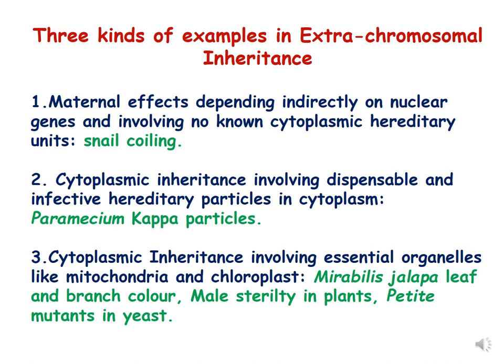There are three kinds of extra-chromosomal inheritance. The first is maternal effects, which depends indirectly on nuclear genes and involves no cytoplasmic hereditary units. The example of snail coiling has already been discussed in lecture 2 of extra-chromosomal inheritance.